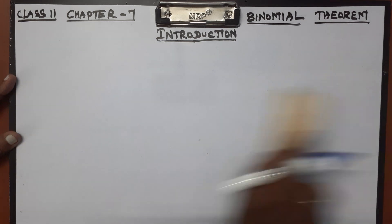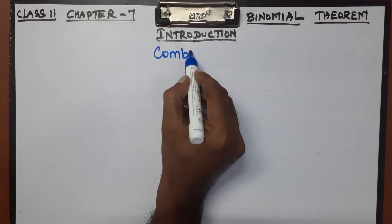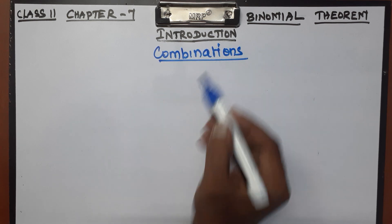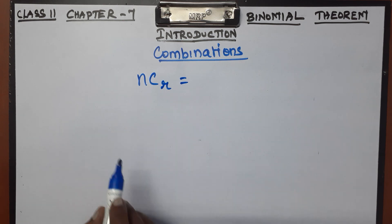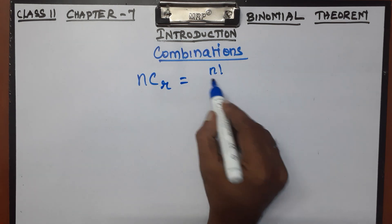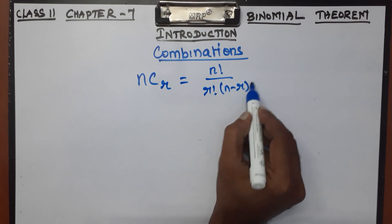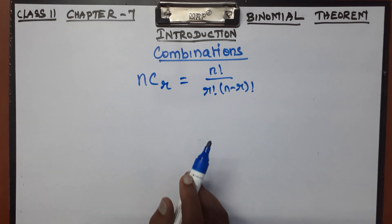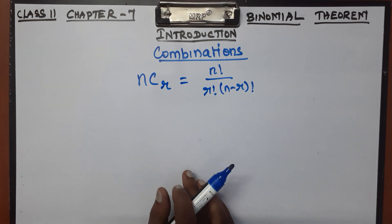In this topic, what are you learning? Combinations! The combinations formula you already learned in 9th standard: nCr equals n factorial divided by r factorial times (n minus r) factorial.